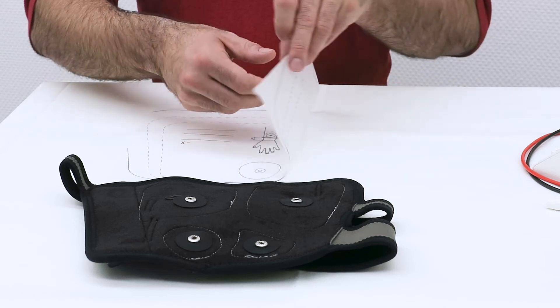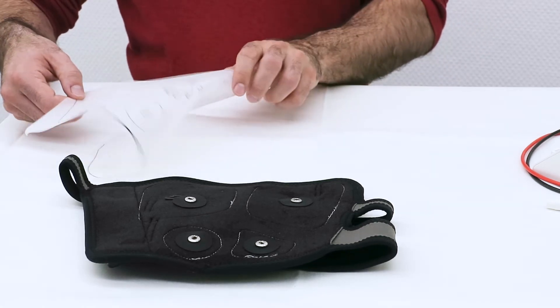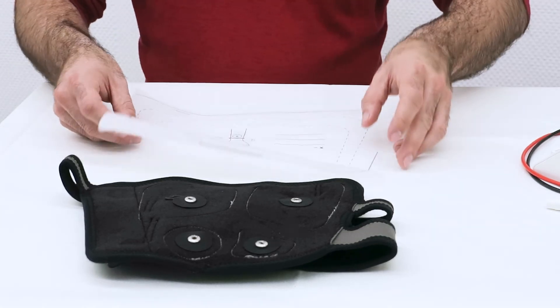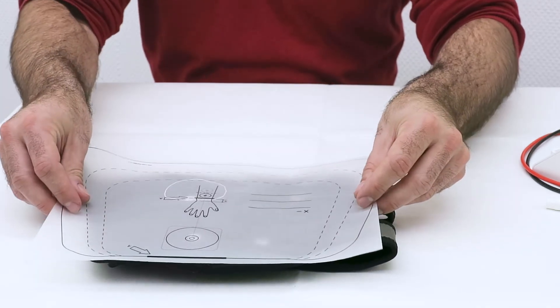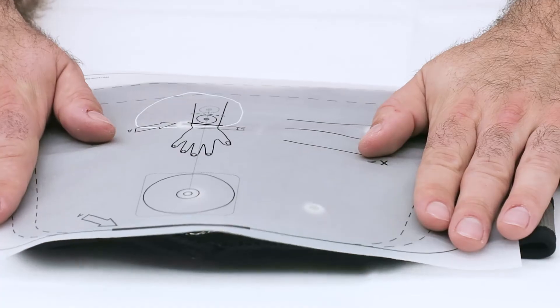Flip the transfer sheet in order to match the traced contour line with the edges of the garment, and place it onto the inner aspect of the garment.